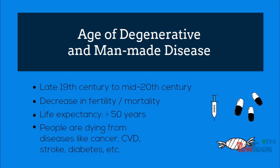The age of degenerative and man-made diseases marks the period from the late 19th century to the mid-20th century in industrialized nations. It is marked by a decrease in both fertility and mortality. Life expectancy once again increases due to the survival of children into adulthood. People are dying less from epidemic diseases, but more from degenerative diseases, such as cardiovascular disease and diabetes.